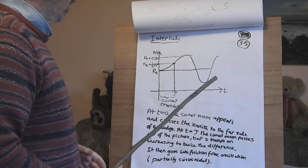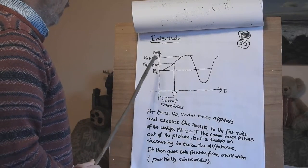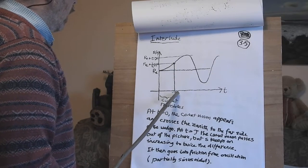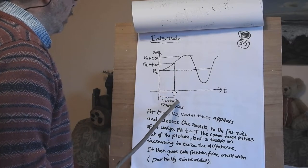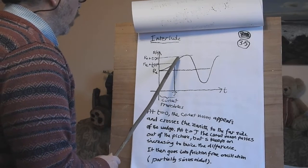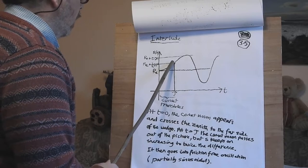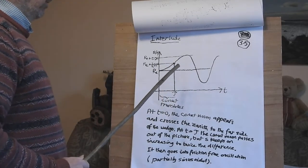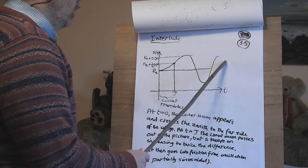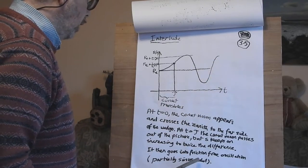So this is a wee interlude. S equals re plus a half d tau squared. After t seconds the comet is gone, but the motion keeps on increasing to twice the difference. And then it goes into friction free oscillation, partially sinusoidal.